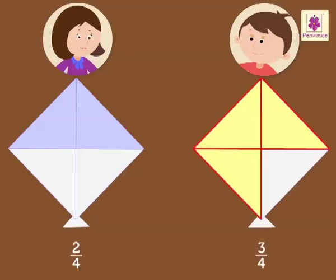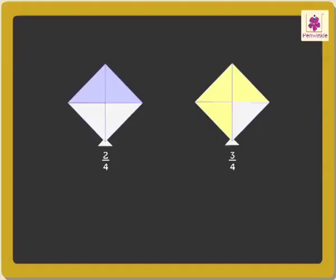Anaya colored two-fourth of the kite and Andy colored three-fourth of the kite. Let us find out who colored more. Did you notice that both the fractions have four in their denominators? Hence here we will only compare the numerators, as the denominators are the same, that is four.